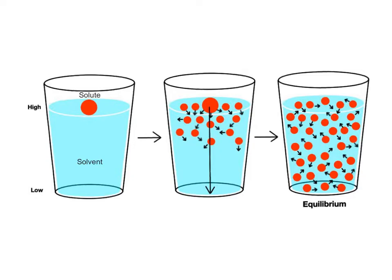In this example, a drop of red food coloring, the solute, is added to a glass of water, the solvent. The drop of food coloring is the area of high concentration, and it's going to randomly disperse or diffuse throughout the glass of water to areas of low concentration.